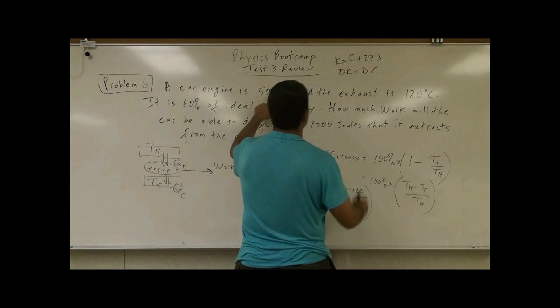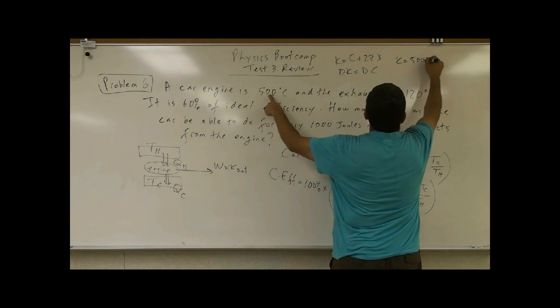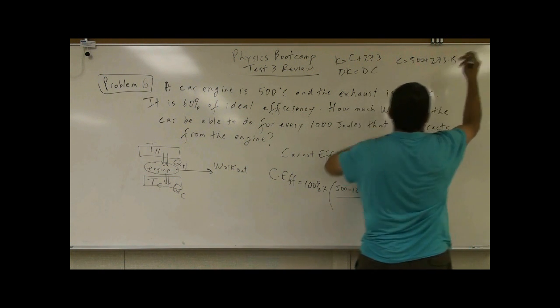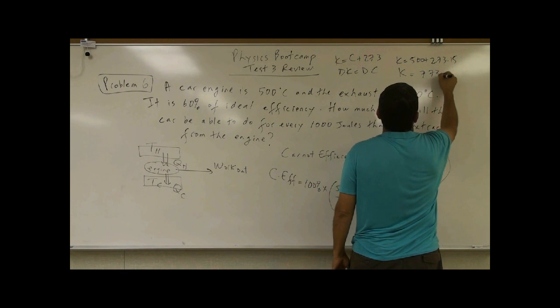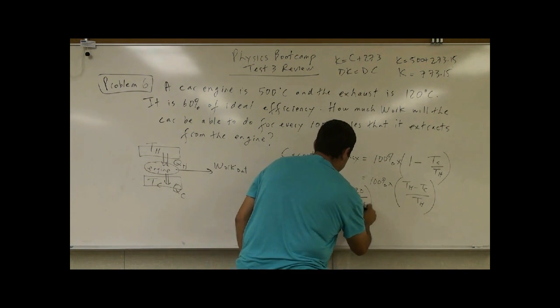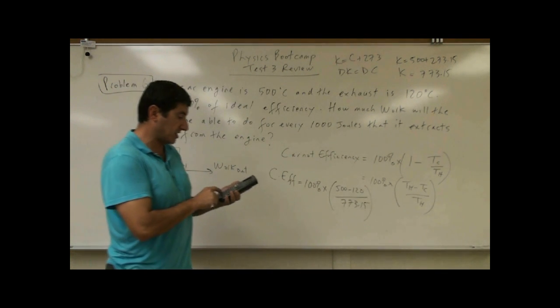So the 500, I have to convert it to Kelvin. So that's the 500 plus 273.15. And to be more exact, let's add the .15. So I get 773.15. So let's calculate the highest efficiency that this engine can be.